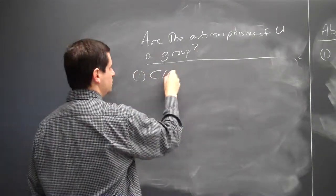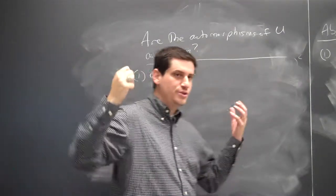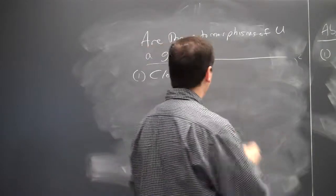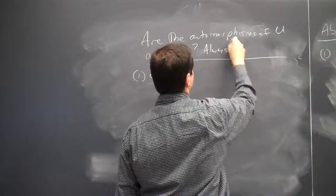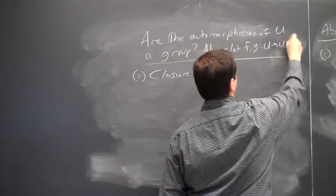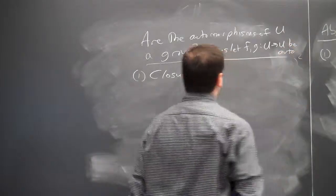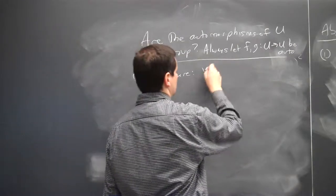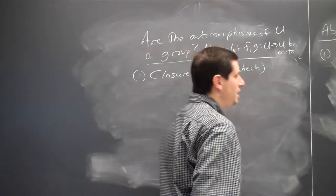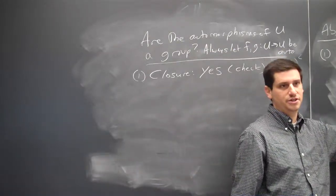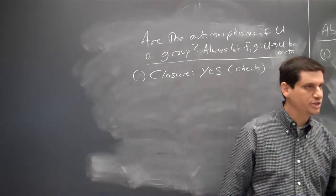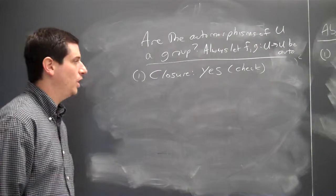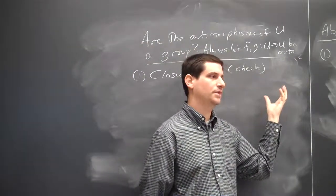A group has four properties. The first is closure: if you start off with two elements in the group and combine them, you stay in the group. So if F and G from U to U are automorphisms, is the composition of two automorphisms an automorphism? Yes. You need to check this — it's basically chasing through the definitions. Because F and G are both injective and onto, their composition is injective and onto. The composition of differentiable functions is differentiable by the chain rule. So it's closed.